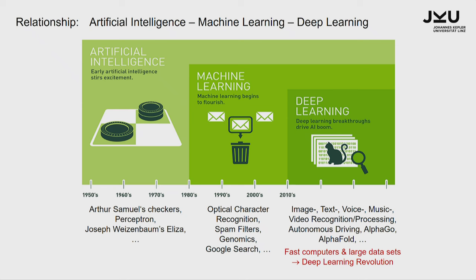You all probably are aware of this picture in one way or another. About 10 years ago, the deep learning revolution started because we had fast enough computers and large enough data sets. Deep learning is a subfield of machine learning, which dates back to the 80s. And machine learning is one pillar and one subfield of the big field of artificial intelligence, which dates back to the perceptron and ELISA back in the 50s.